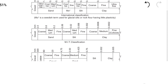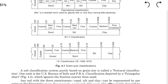As per Indian Standard, clay is below 0.002 mm. Silt is below 0.075 mm. Fine sand is below 0.425 mm. Medium sand ranges from 0.425 mm to 2 mm.